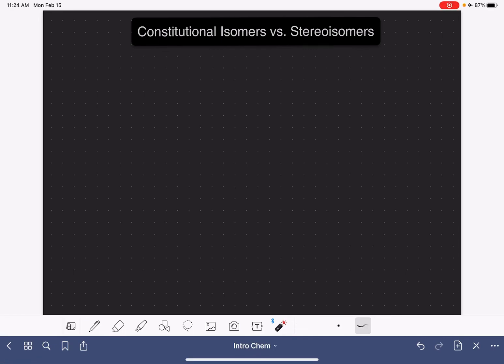In this video, I'm going to do a real quick review of constitutional isomers and stereoisomers. Both constitutional isomers and stereoisomers are examples of isomers, just in general.